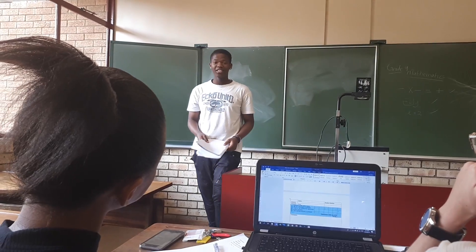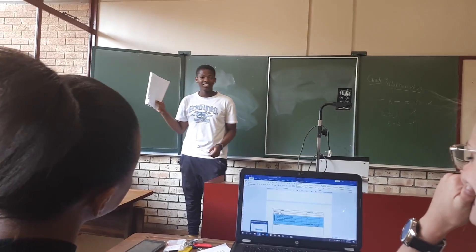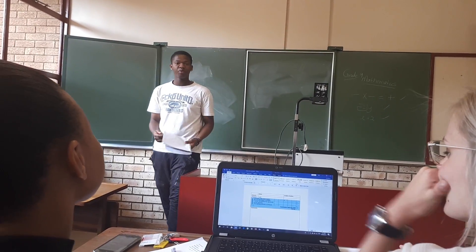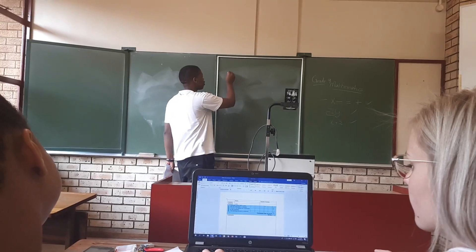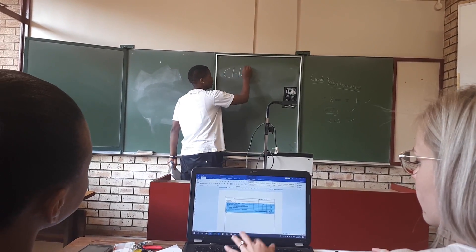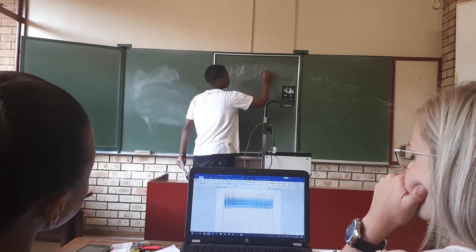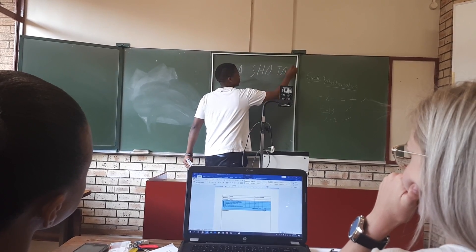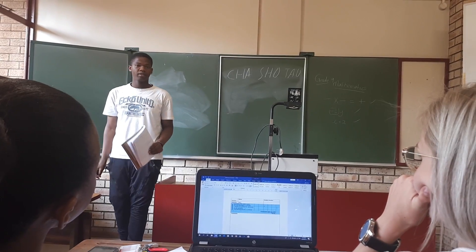The angle of elevation is when you look up, and the angle of depression is when you look down. So throughout the lesson we are calculating. The important things to know for you to calculate are your ratios and what they represent in this topic.